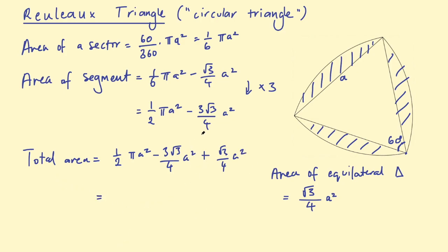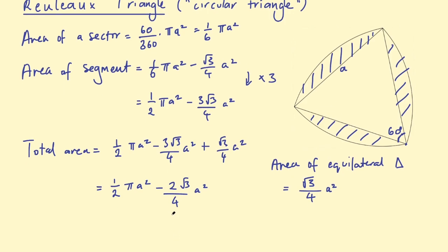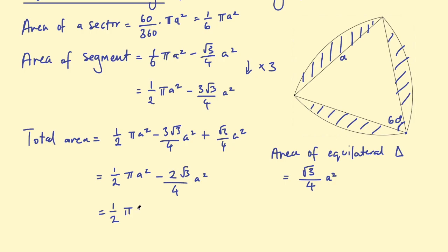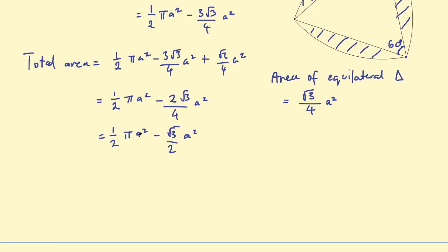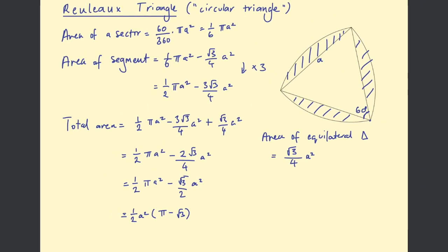Now let's simplify. The terms negative (3√3/4)A² and positive (√3/4)A² are like terms. Negative 3 of something plus one of that thing gives negative 2, so that becomes negative (2√3/4)A². This gives us (1/2)πA² minus (2√3/4)A², and since 2/4 equals 1/2, we can write this as (1/2)πA² minus (√3/2)A². Factoring out the common factors of 1/2 and A², the area of this Reuleaux triangle is (1/2)A²(π − √3).